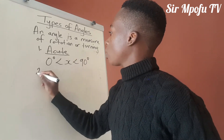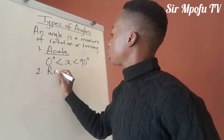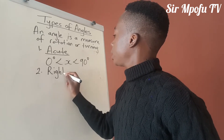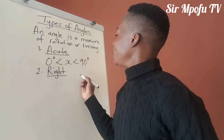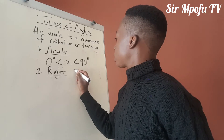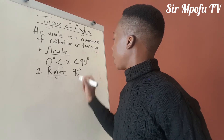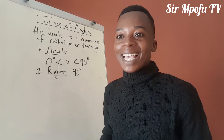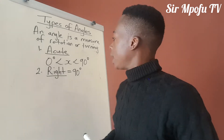Then the second one, we have got the right angle. This one is exactly 90 degrees. That is what you call the right angle — right angle is exactly 90 degrees.